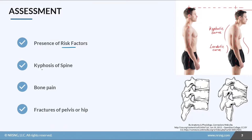We also see kyphosis of the spine. As the bones lose their density, they become compressed under the weight of just standing, and they start to bend forward and become kind of soggy. Think about that styrofoam analogy and how easy it is to compress — the vertebrae smush down and the patient starts to bend forward.